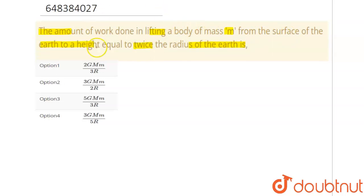So let's solve this question. First of all, the body is raised by a height of twice the radius. Okay, so the body is raised to a height that is 2R.